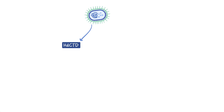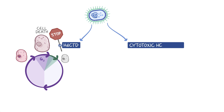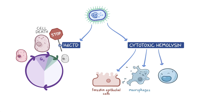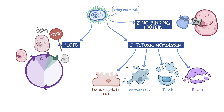Haemophilus ducreyi also makes two toxins. The first, cytolethal distending toxin (HdCDT), causes G2/M cell cycle arrest — it stops the cell cycle when the cell is at its largest in preparation for mitosis, preventing division, and eventually causing cell death. The second, cytotoxic hemolysin, can lyse foreskin epithelial cells and immune cells such as macrophages, T-cells, and B-cells, leading to tissue destruction and immune evasion. Finally, Haemophilus ducreyi has a zinc-binding protein that snatches zinc from host cells to support its replication.